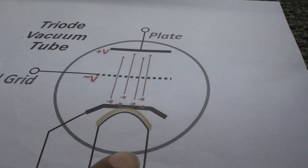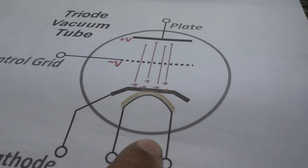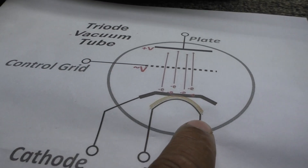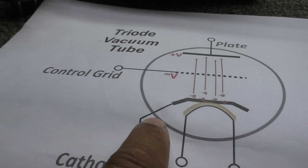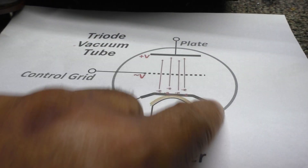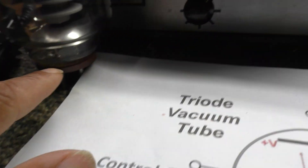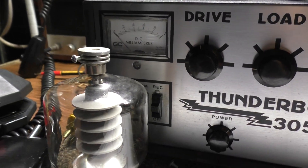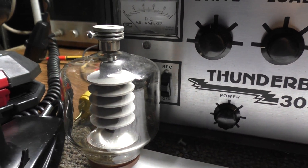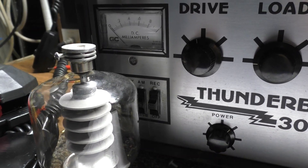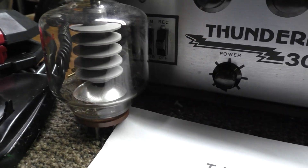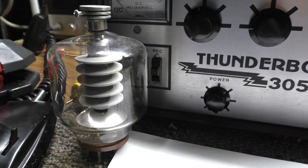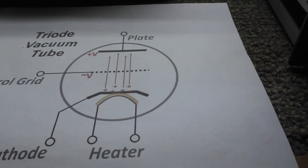Usually RF tubes have the plate cap at the top, while most audio tubes have the plate coming out a pin at the bottom. The reason is RF likes to radiate everywhere. If you take that RF coming out the plate and run it back down through the tube to a pin at the bottom, the RF radiates and jumps over to the heaters, cathode, and control grid because they share the same bottom pins. With the plate cap at the top, it's away from them, so you get less feedback and less internal radiation.